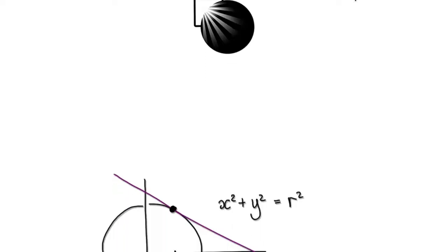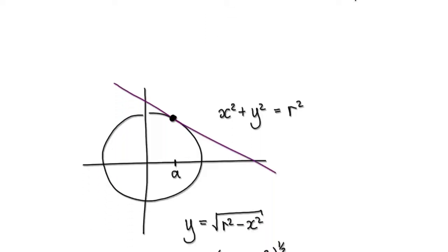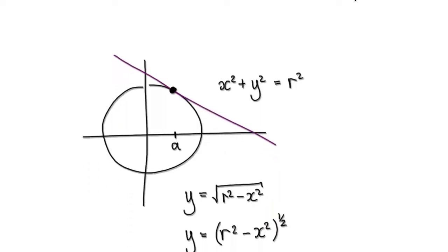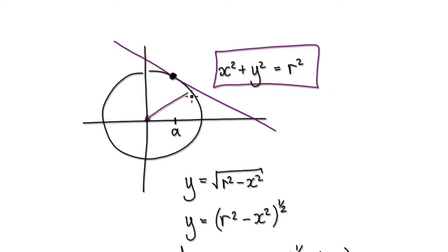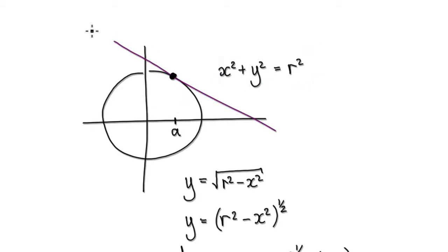In this video, we're going to draw the tangent line of a circle in Desmos. The equation of a circle is given by x squared plus y squared equals r squared, where the radius is r. Our job is to come up with the equation for this tangent line, and then draw it into Desmos.